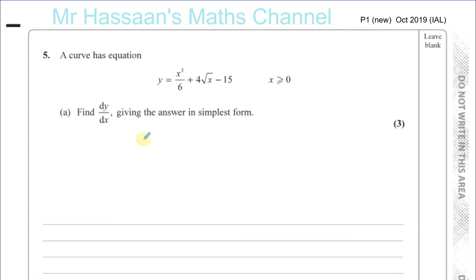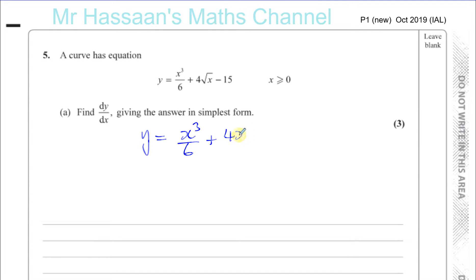Before we differentiate, we're going to get it ready for differentiation. x cubed over 6 is fine, but things written in surd form, like 4 times root x, should be written in index form. So this is 4 times x to the power of a half, and you've got your minus 15.